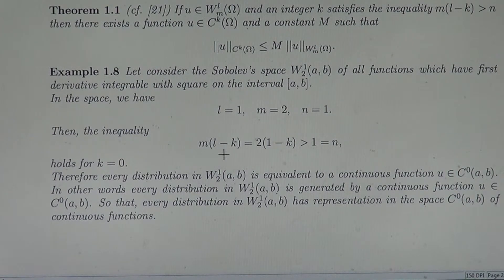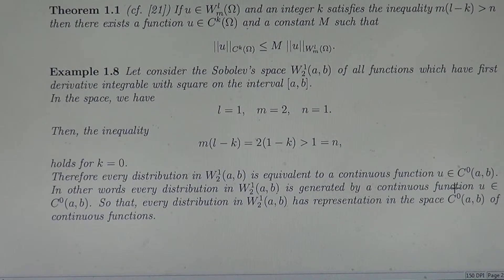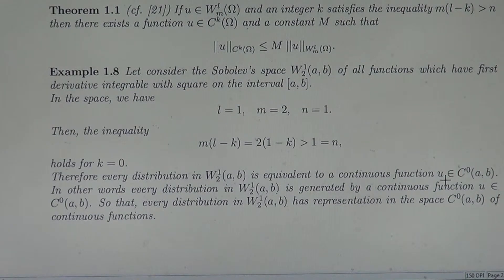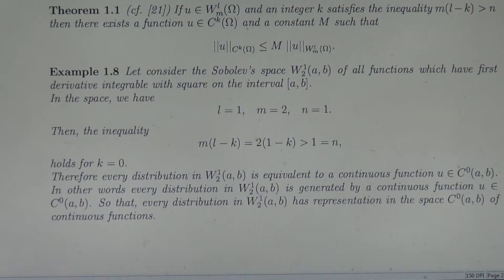This inequality holds when K is equal to 0. Therefore, every distribution in the Sobolev space W^{1,2}(a,b) is equivalent to a continuous function in C^0(a,b). Equivalent means the distribution is equal to U almost everywhere, except a set of measure zero. In other words, every distribution is generated by a continuous function C^0, so that every distribution has a representation in the space of continuous functions.